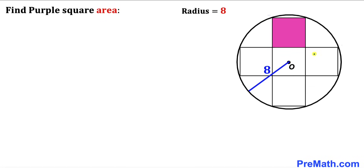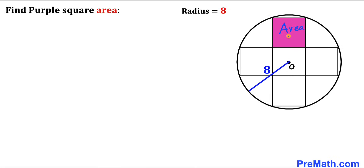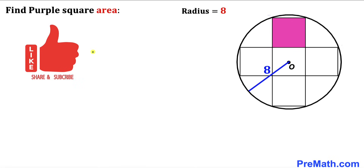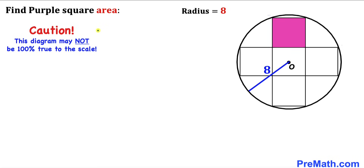Welcome to Pre-Math. In this video we have five identical squares fully inscribed in a circle with center O, as you can see in this diagram, such that the radius of this circle is 8 units. All these squares are congruent and our task is to calculate the area of this purple shaded square. Please keep in mind that this figure may not be 100% true to scale.